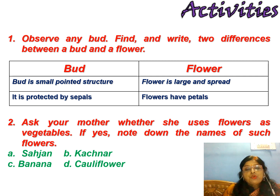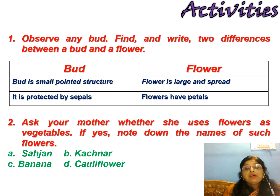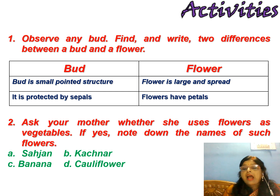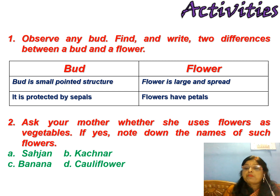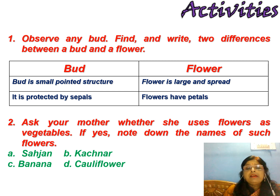Already you have done this activity, but once again I am going to give you the revision. The first question is: observe any bud. You have to go to the garden or look at your flower pot and observe the bud. Write two main differences between a bud and a flower. A bud is a small, pointed structure, while a flower is large and spread out. The bud is protected by sepals which are green in color, while flowers have petals.